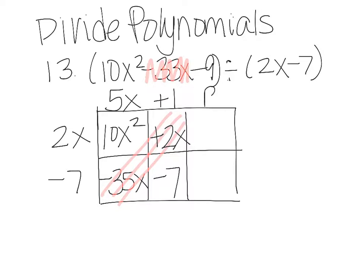Now I put a constant up there. That means this last column is for my remainder. This negative 7 and whatever's in this diagonal have to add up to this negative 9 up here. Because they're like terms. So if I'm at negative 7, how do I get to negative 9? I have to subtract 2.